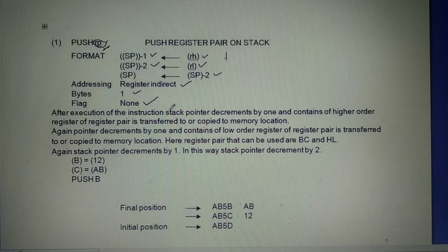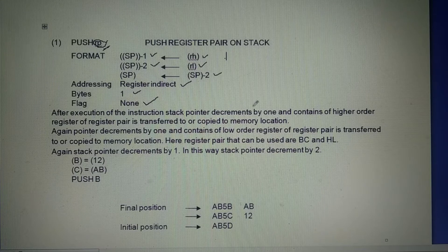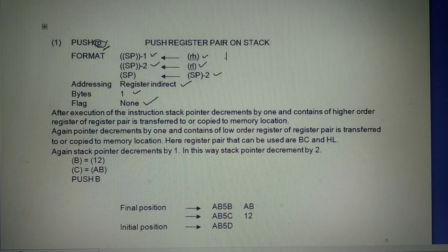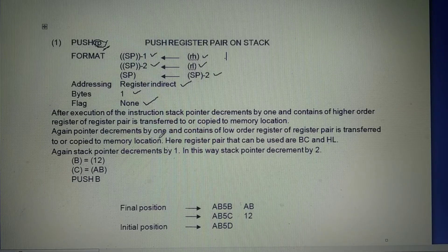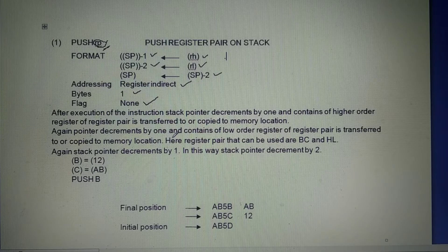The general explanation of this instruction. After execution of the instruction, stack pointer decrements by one and contents of high-order register of register pair is transferred to or copied to memory location. Here, register pair that can be used are BC, DE, and HL.